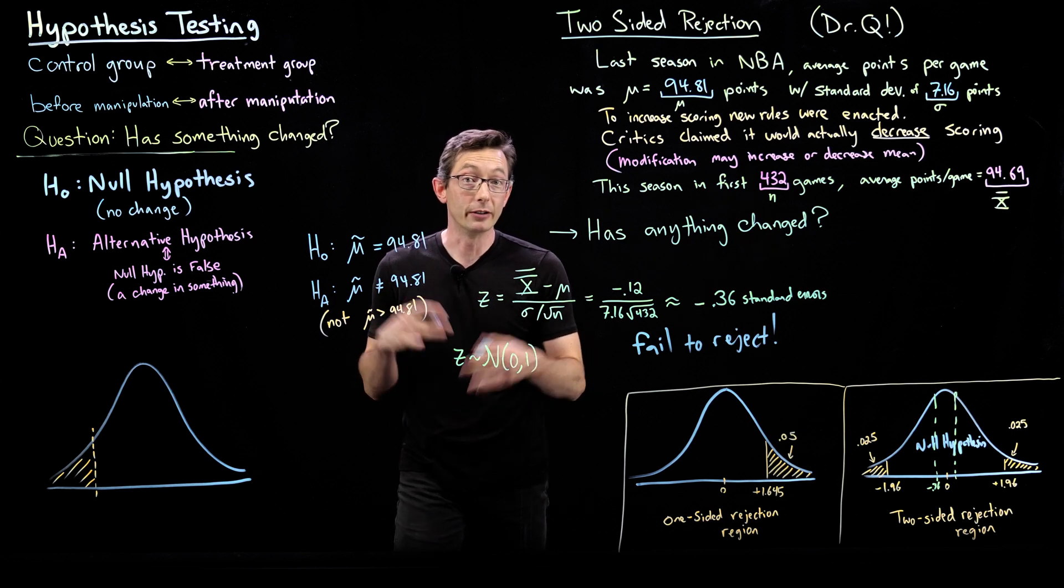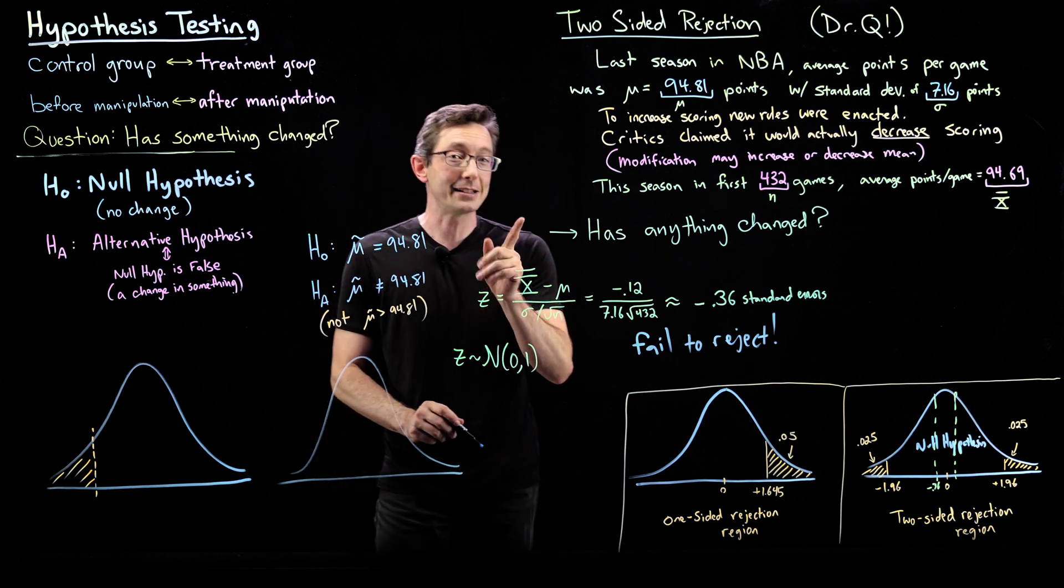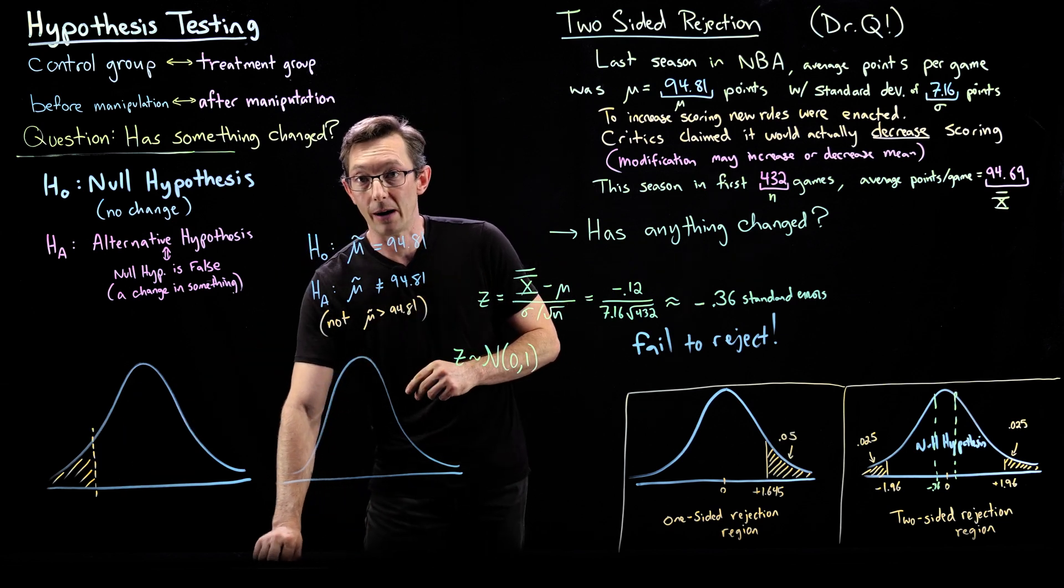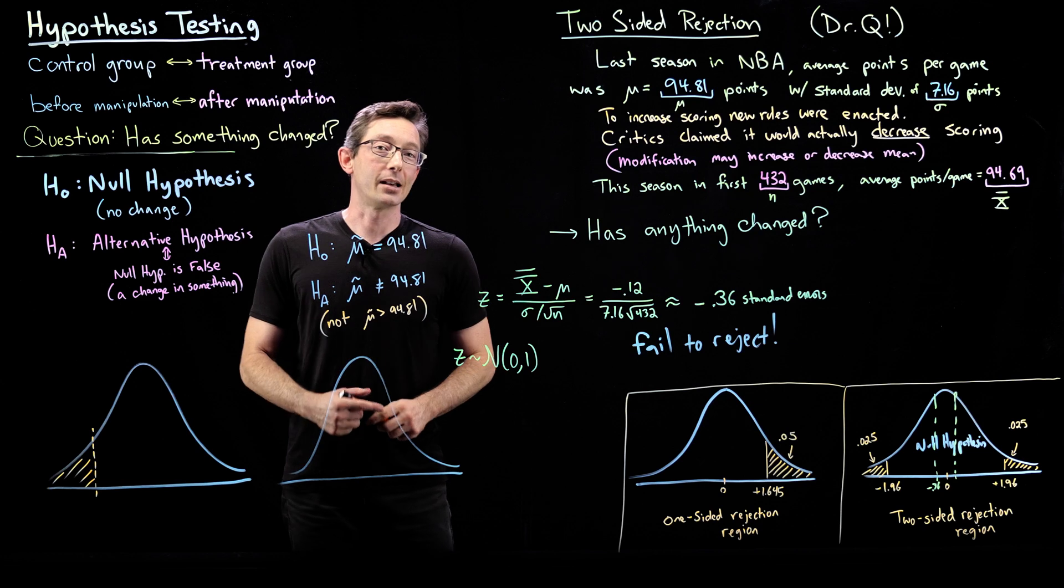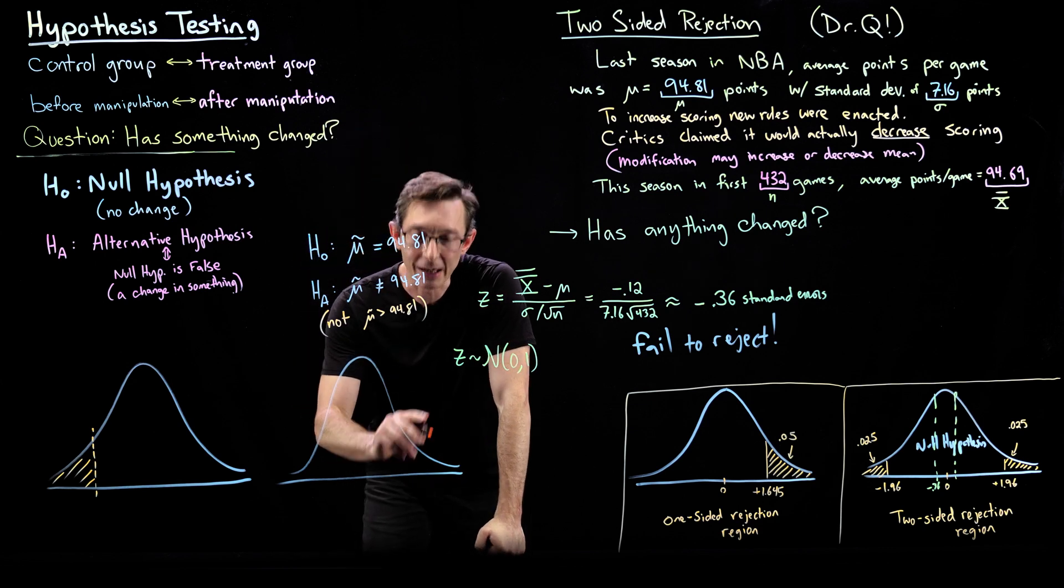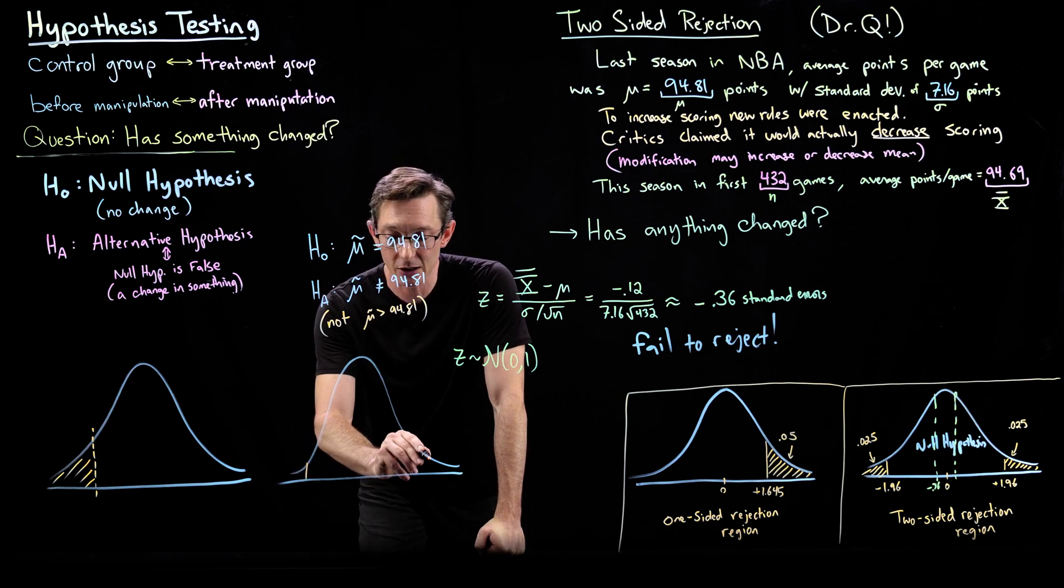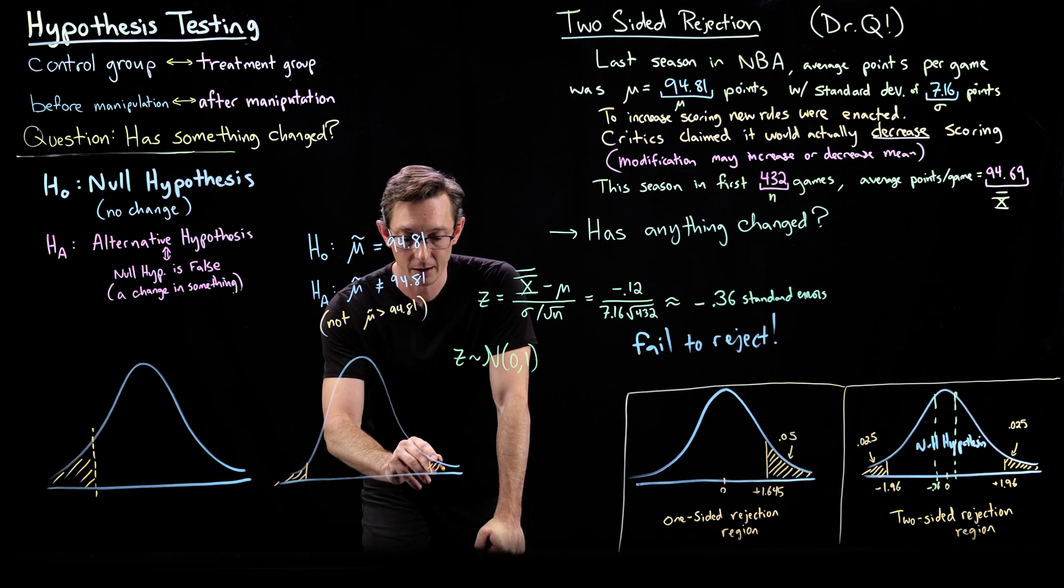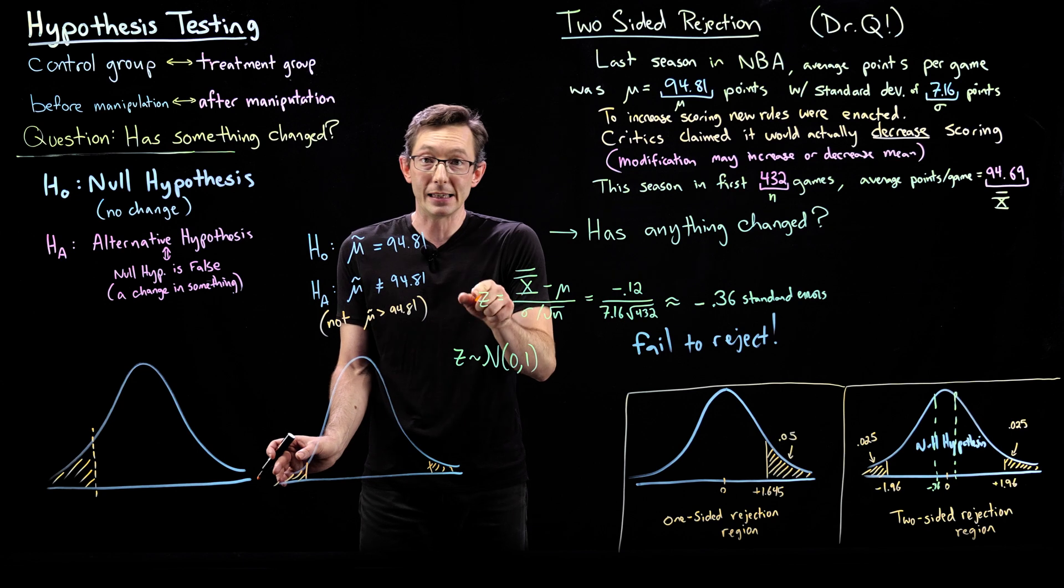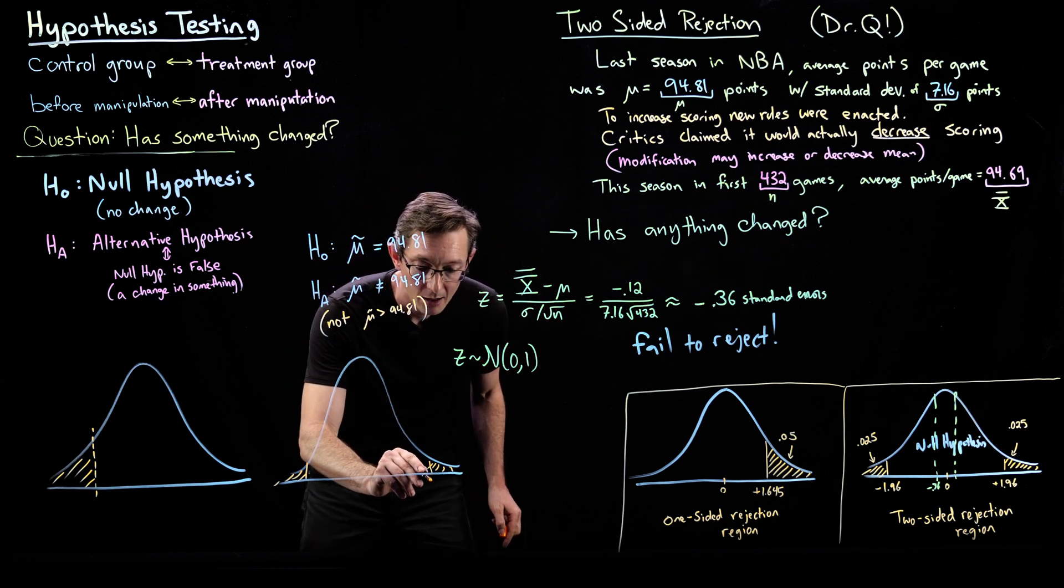But a very clever thing you could do if you are big tobacco is you could cast doubt in the following way. You could say, well, cigarettes may indeed harm the population that smokes. Maybe cigarettes have unknown positive health benefits. Maybe they actually clean your lungs and have magical properties. So in the case that cigarettes could not only hurt your population health but also might improve it, that becomes a two-sided rejection region test. And that becomes a more stringent test. You need a more rare Z value. You need more standard errors. You need to be farther from the mean of the distribution to reject that null hypothesis, that cigarettes do nothing.